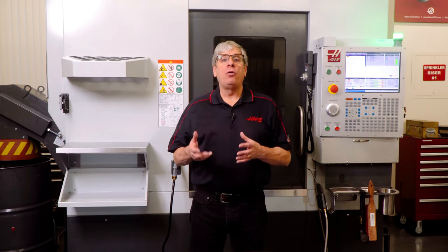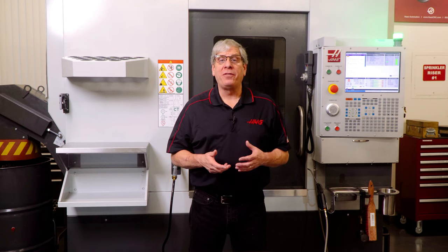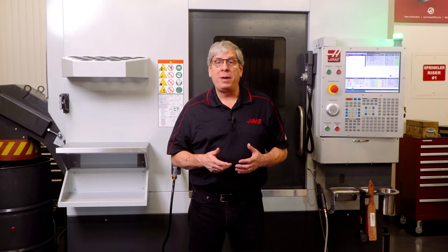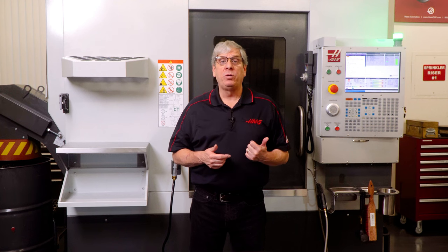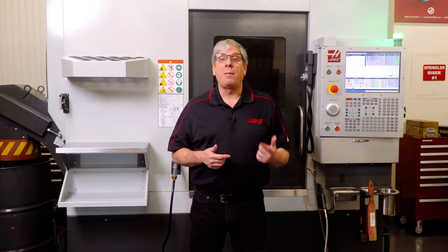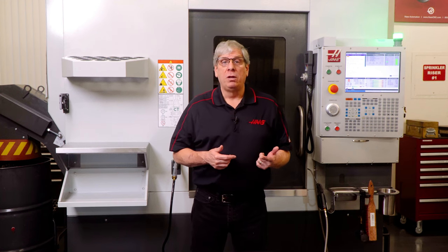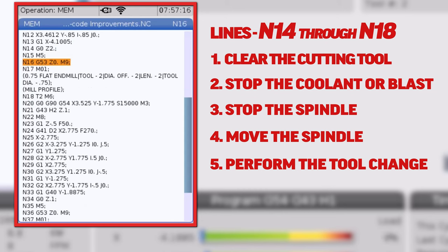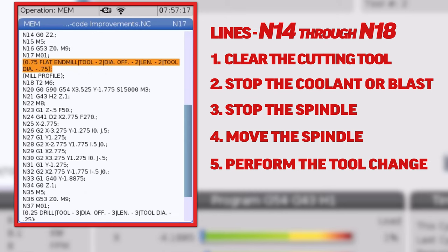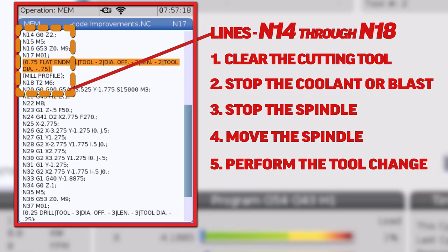The typical program format for the end of a tool path is to clear the cutting tool from the material, stop the coolant or air blast, stop the spindle, move the spindle to tool change position, and perform the tool change. We can see that example here.